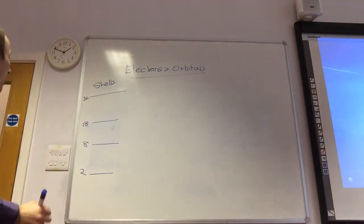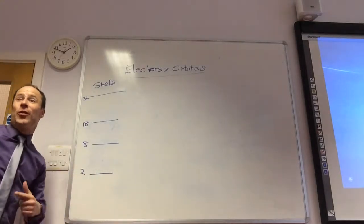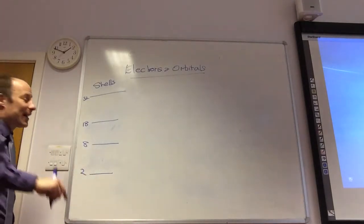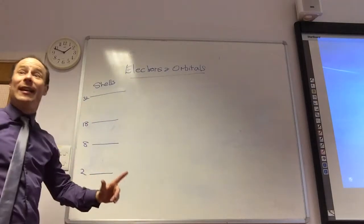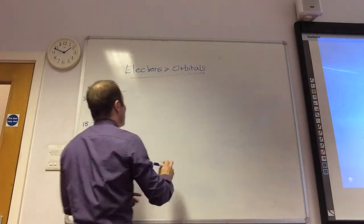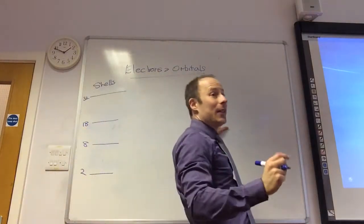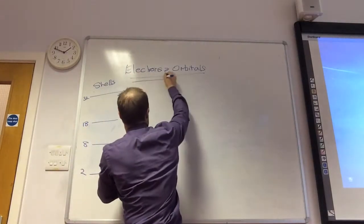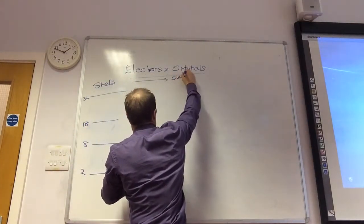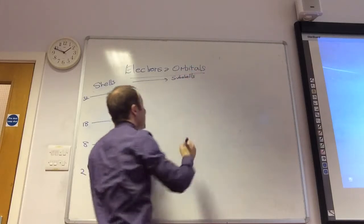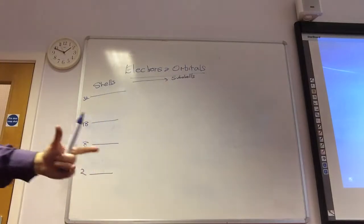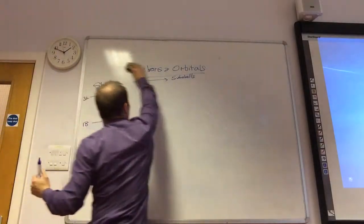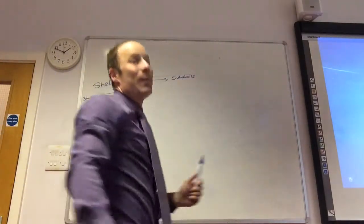And then in the next shell we would actually have 32. Why do we have 18? So we have to read with Fro and I'll show you how I get to 18. We break shells down into sub-shells. Sub-shells can be S, P, D, and F.